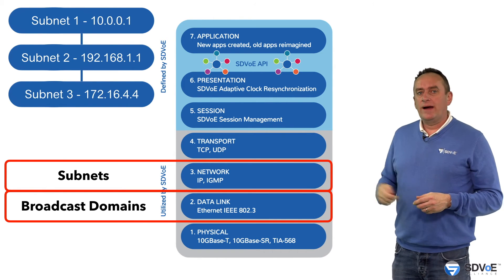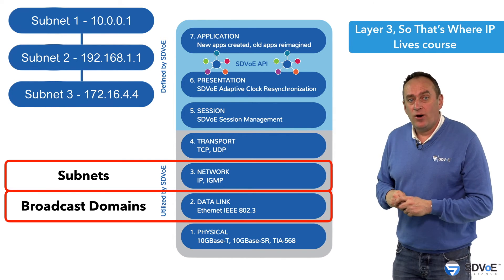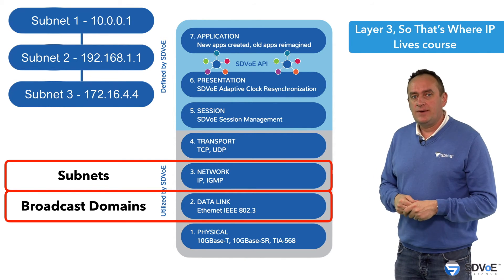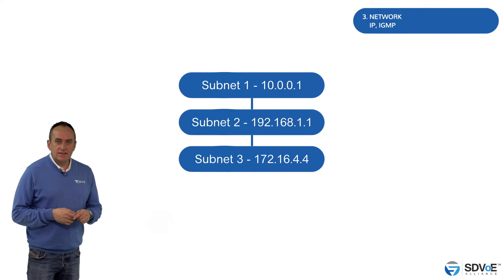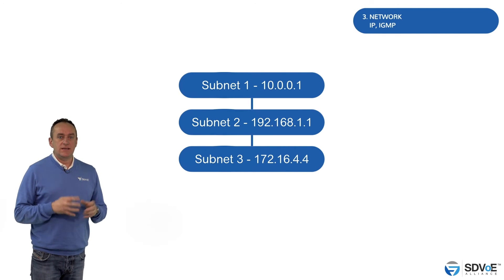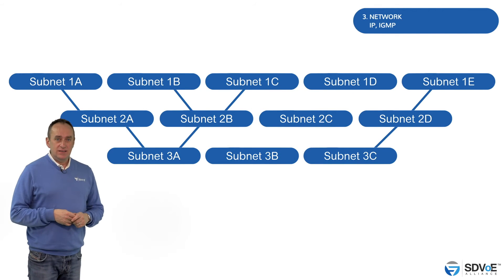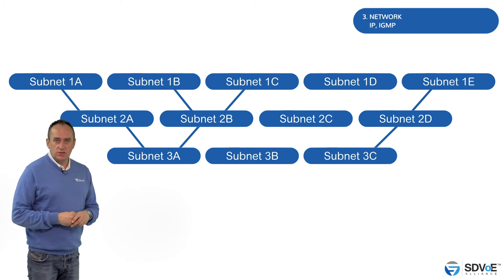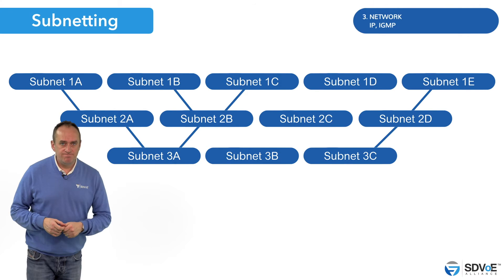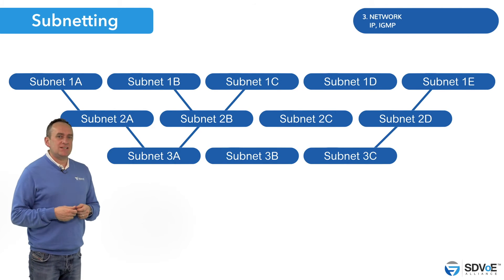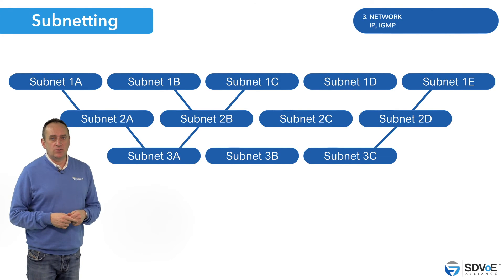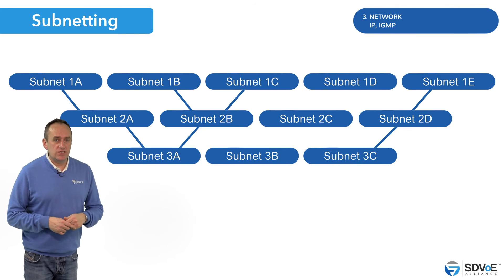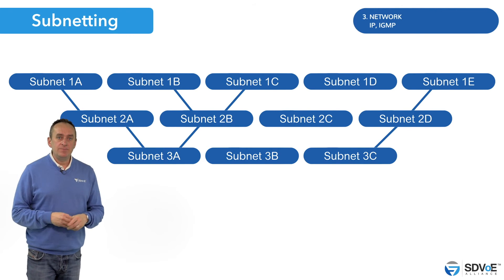You can learn more about IP on the 'Layer 3 — that's where IP lives' course here on the Academy. Layer 3 subnets, like layer 2 broadcast domains, can also be subdivided to create smaller, more manageable networks using a process called subnetting. This process is considerably more complex than VLANs and would generally be carried out by an IT professional. We'll take a deeper dive into layer 3 subnetting very soon here on the SDVoE Academy.